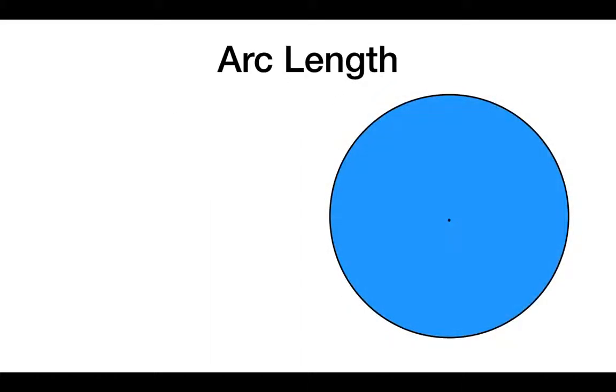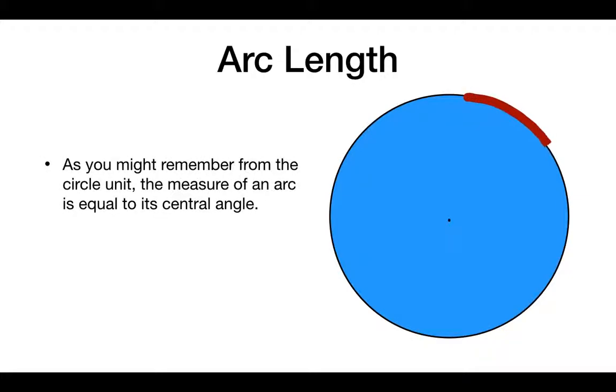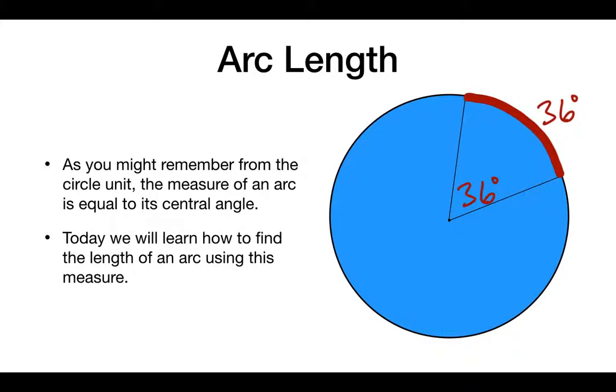So let's start with arc length. You might remember an arc because it's a part of a circle. You might remember that the measure of an arc is in fact equal to that of its central angle. So if this central angle is 36 degrees, we could say that the measure of the arc was also 36 degrees.